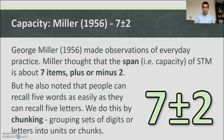Further research into capacity was done by George Miller in 1956, who suggested seven plus or minus two. Miller made observations of everyday practice and thought that the capacity of short-term memory is about seven items, plus or minus two. He also noted that people can recall five words as easily as five letters — we do this by chunking: grouping sets of digits or letters into units or chunks.